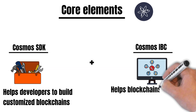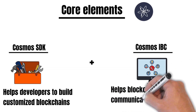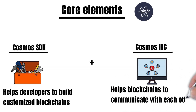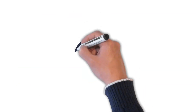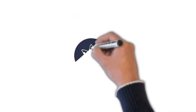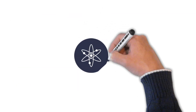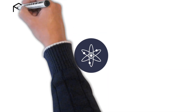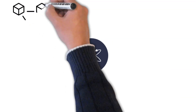If you want to learn more about IBC, check out our previous episode where I explain IBC in one minute. All in all, Cosmos makes it very easy to create application-specific blockchains that are highly interoperable with the rest of the Cosmos network.